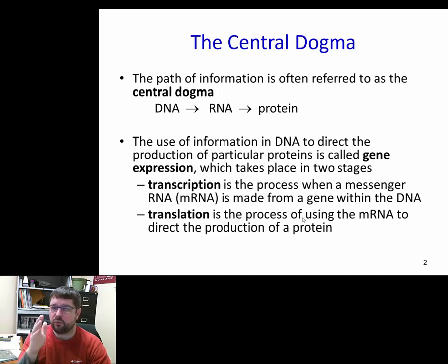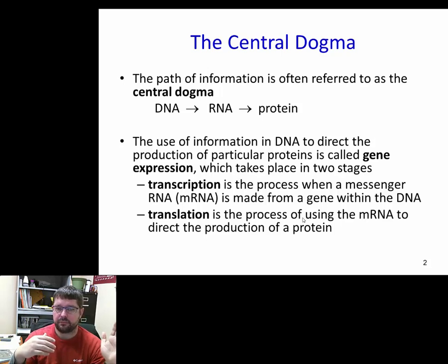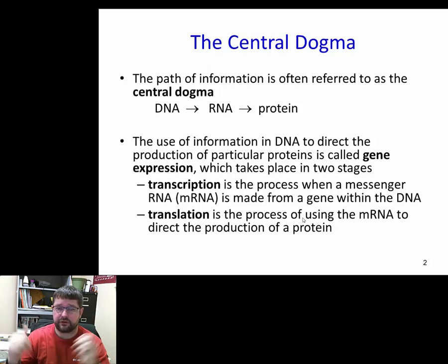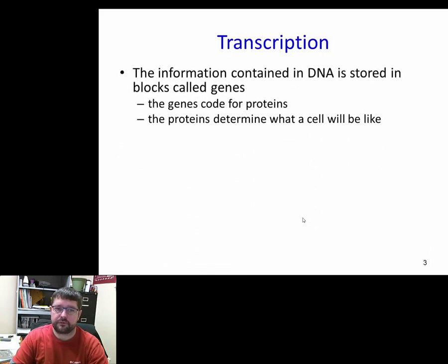That formation of the protein is what we call translation — you're using the blueprints of your messenger RNA to link together amino acids in the correct order. Once the amino acids are linked into the correct order, they can twist, fold over, and go from a primary protein all the way to a quaternary protein by just binding, wrapping, and doing protein-to-protein interaction.